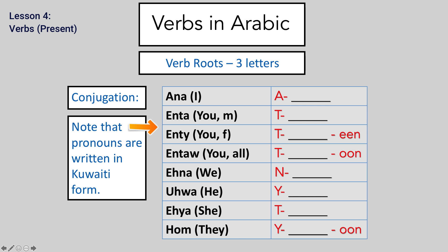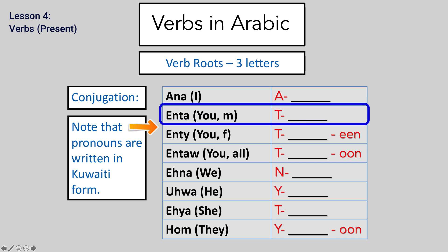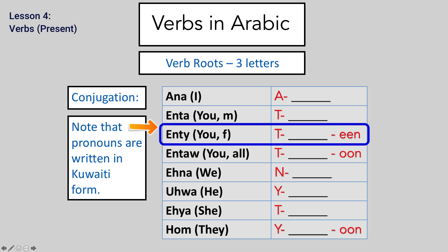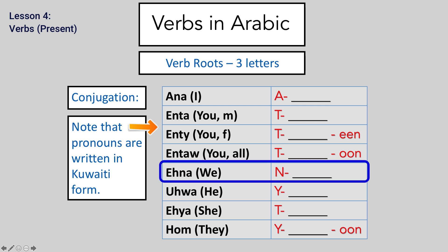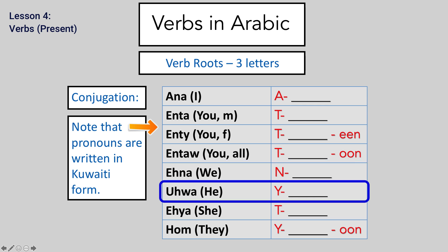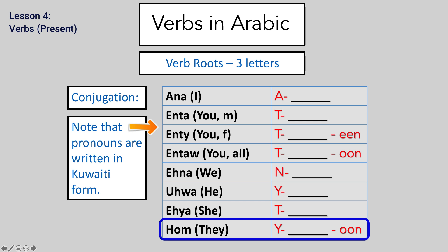To start this lesson, we're going to talk about verbs. In Arabic, verbs have a root of three letters and the conjugation goes like this. For Ana (I), you add an A at the beginning. For Enta (you, masculine), you add a T. For Enti (you, feminine), you add a T and then ein at the end. For Entau (you all), you add a T and then un at the end. For Ahna (we), you add an N at the beginning. For Uhua (he), you add Y at the beginning. For Ihya (she), you add a T at the beginning. And for Whom (they), you add a Y at the beginning and then un at the end.